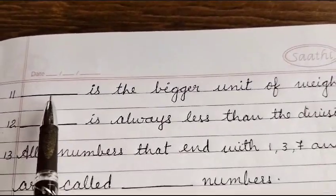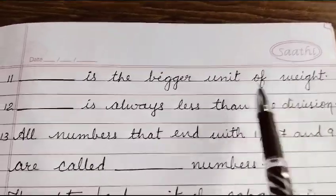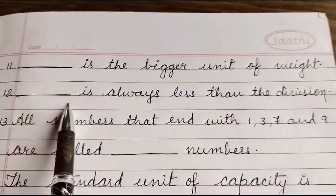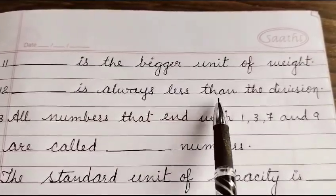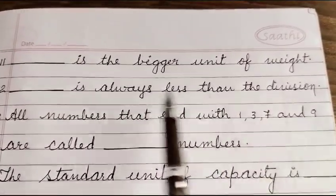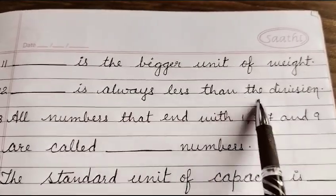Question number 12: Dash is always less than the division.